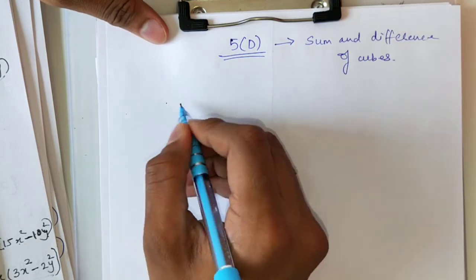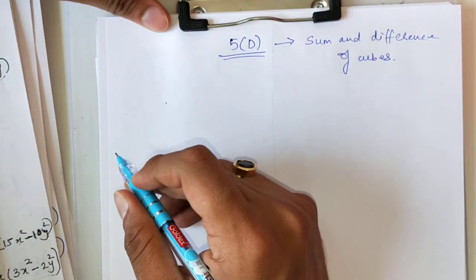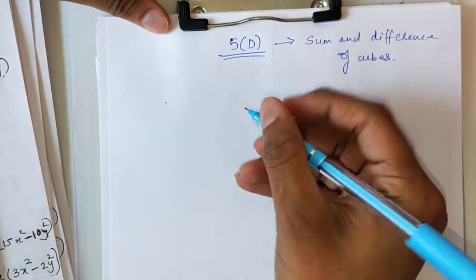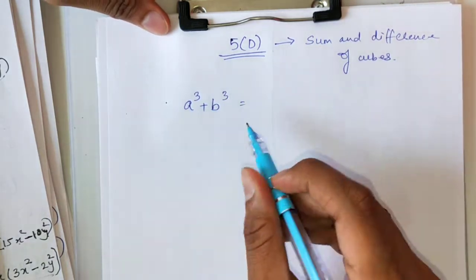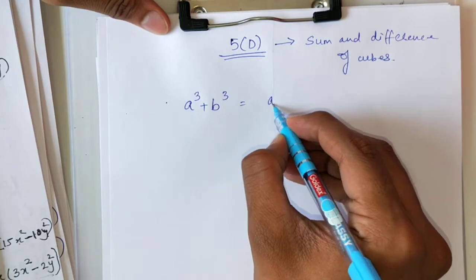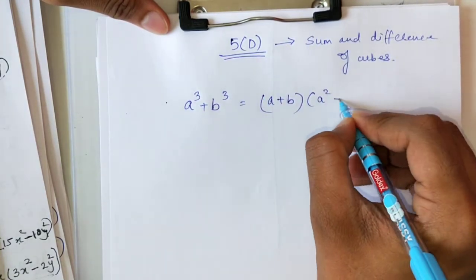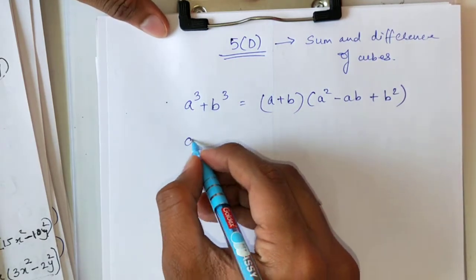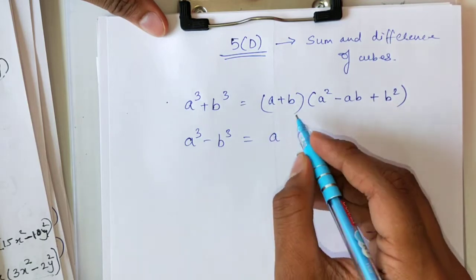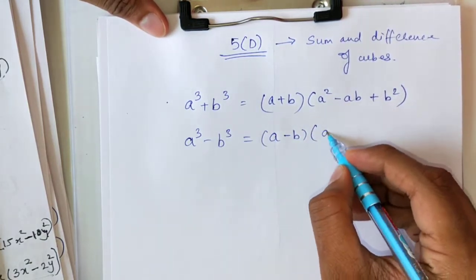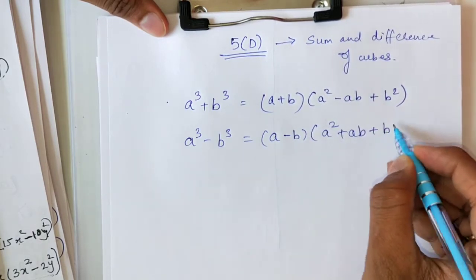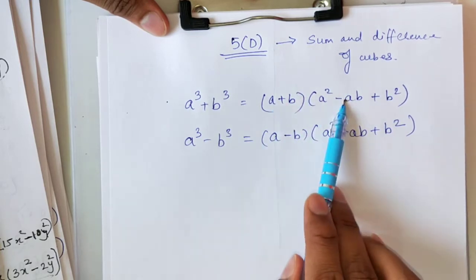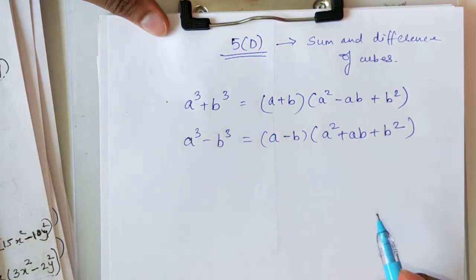There are two formulas in this exercise. These formulas are different from those formulas we did in the expansion chapter - the cube formulas in the factorization chapter are different from expansion, so don't get confused. The formula for a³ + b³ is (a + b)(a² - ab + b²). For a³ - b³, only the signs change: it becomes (a - b)(a² + ab + b²). If the formula is for addition, the first sign is plus and second is minus; if subtraction, first is minus and second is plus.